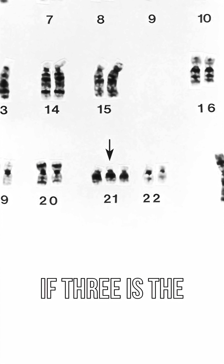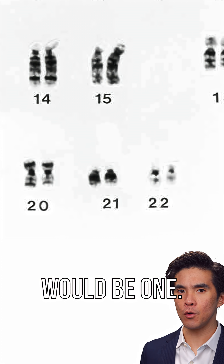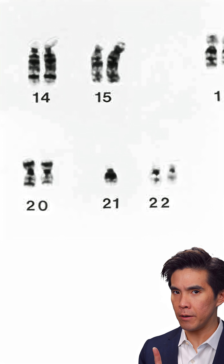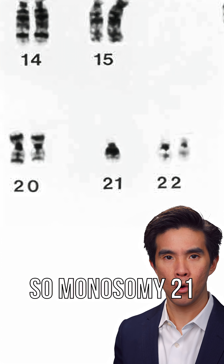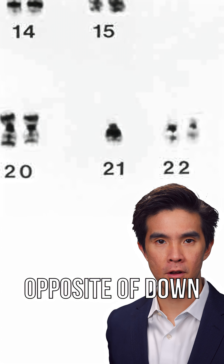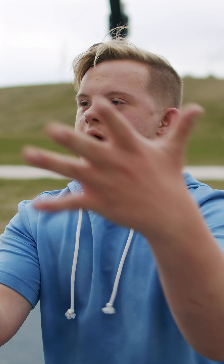If 3 is the anomaly and 2 is the norm, then the opposite, we could say, would be 1. So monosomy 21 might be the opposite of Down syndrome — but there's a problem.